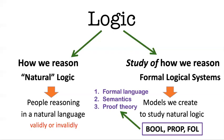In order to build those formal systems, we actually make them with three parts. The formal systems we're going to create have names like Bool, Prop, and FOL. Each one of those systems has three components: every formal system needs a symbolic or formal language; it has a semantics, which has to do with the meanings of those symbols; and it also has a proof theory, which is a tool for constructing proofs and proving that arguments are valid. In this video, really what we're talking about is the concept of validity — when some premises actually entail or require that a conclusion is true.